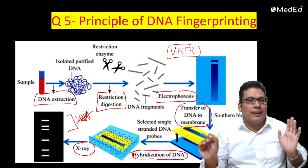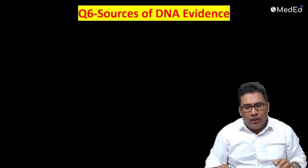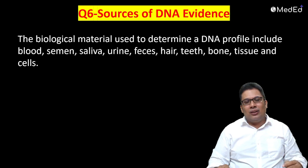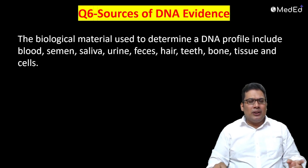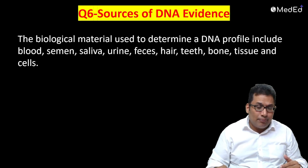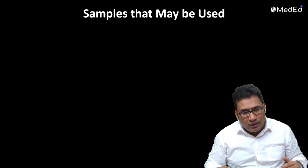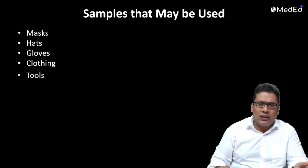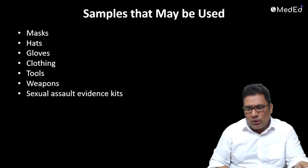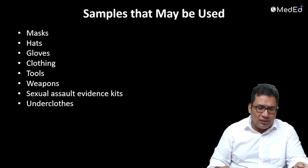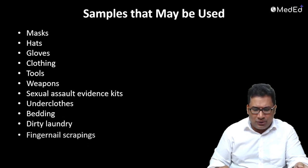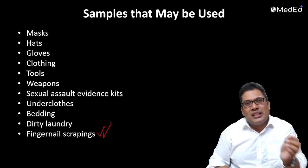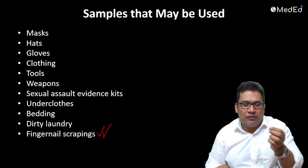What are the sources of DNA evidence? There are many sources - you can collect blood, semen, hair, teeth, bone, tissue, and cells. Samples can come from masks, hats, gloves, clothing, tools, weapons, and sexual assault evidence kits. Fingernail scrapings can also be used, as they consist of skin epithelial cells that contain DNA.